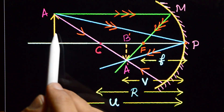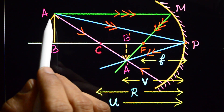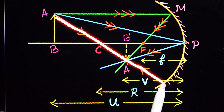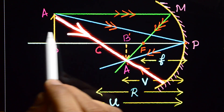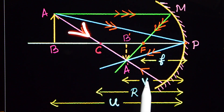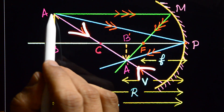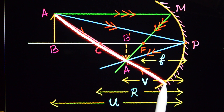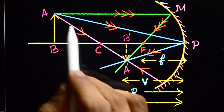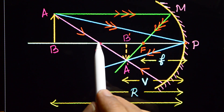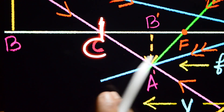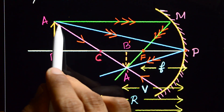After that, draw the first ray. That is the ray along the principal axis, which cuts the concave mirror. In the mirror, the incident ray reflects and this arrow mark indicates the direction. That is the center of curvature C. This is the first ray you need to draw.